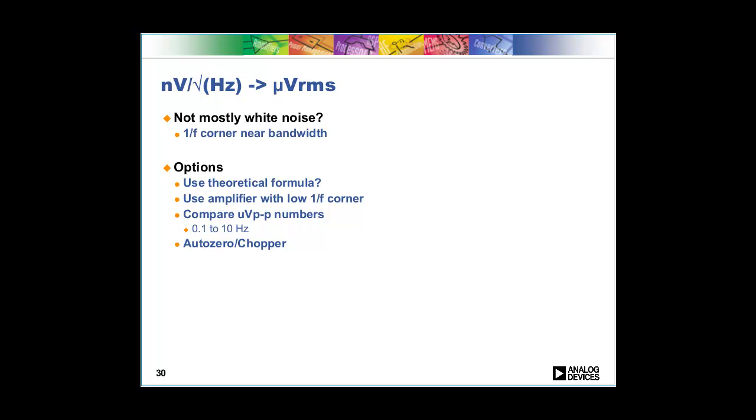Now, what do you do if we can't use our assumption that we talked about before? Before we said our 1 over F corner is much lower than our bandwidth, so we'll just ignore that 1 over F stuff, and we'll just assume that everything is white, and just use our shortcut formula. But let's say that we're near the 1 over F corner with our bandwidth. Say we have a 100 hertz bandwidth. Then what do we do? Well, one thing you could do is you go back and use that theoretical formula. That's one thing you can do. Another thing that you should make sure and do is that you're using an amplifier with a low 1 over F corner.